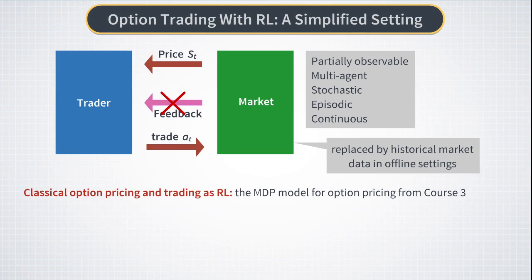In a previous course we discussed how this setting can be modified to make it amenable to reinforcement learning. A key step is to abandon the continuous-time formulation and go back to a discrete-time formulation. It is very natural to consider time steps that correspond to actual rehedging frequencies — if we rehedge daily, we use daily time steps, and so on. The fact that we retain finite time steps makes perfect hedging impossible, and this step is crucial. After this step is made, all other improvements can be added incrementally.